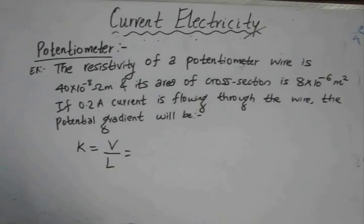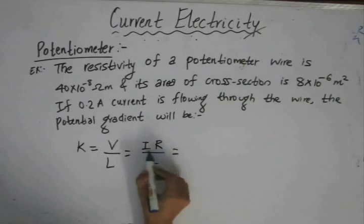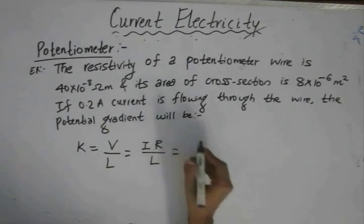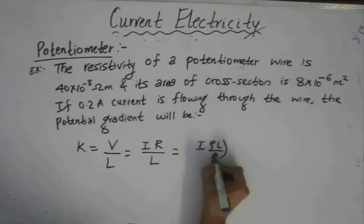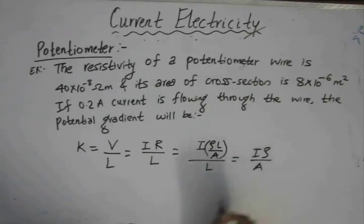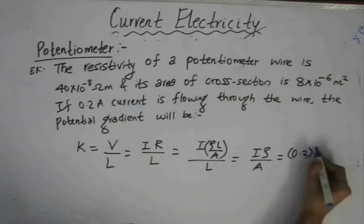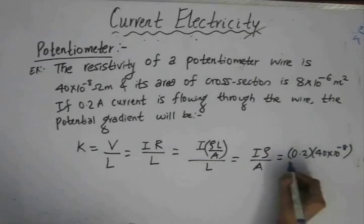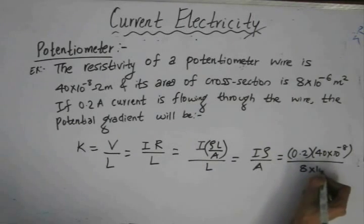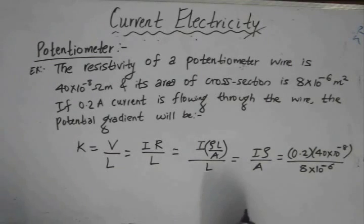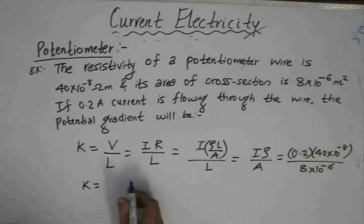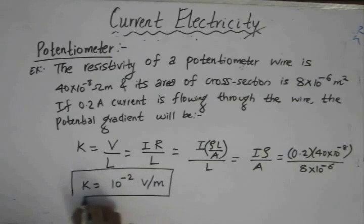Since the parameters are given in terms of current, resistivity, and area of cross-section, we use the expression i·ρ divided by A. Substituting the values: current is 0.2 amperes, resistivity is 40 × 10⁻⁸ ohm-meter, and area of cross-section is 8 × 10⁻⁶. Solving this expression gives a potential gradient of 10⁻² volts per meter for this potentiometer circuit.